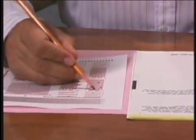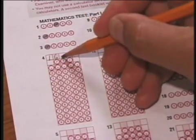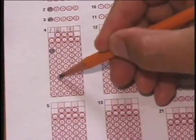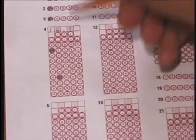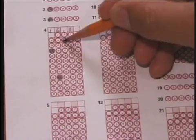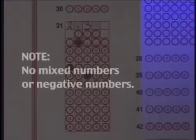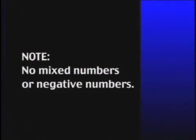You've now seen how to mark an answer using the standard and coordinate grids. When using the standard grid, remember to use the empty boxes at the top to record your answer, one numeral or symbol per box. You must then fill in the circles that represent those numerals or symbols using no more than one circle in each column. Answers for these questions can be whole numbers, fractions or decimals, but not mixed numbers or negative numbers.